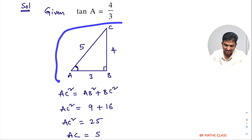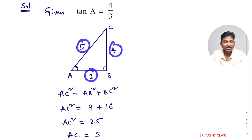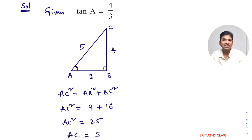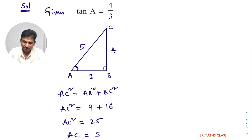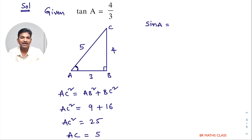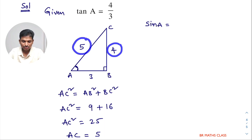Now, knowing all three sides of the right angle triangle, I can easily write all other trigonometric ratios. Sin A is opposite side divided by hypotenuse. The opposite side is BC which is 4, and hypotenuse AC is 5. So sin A equals 4 divided by 5.